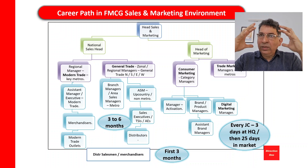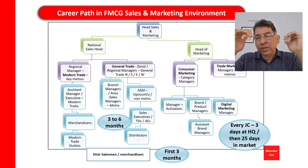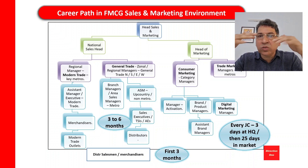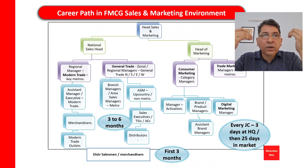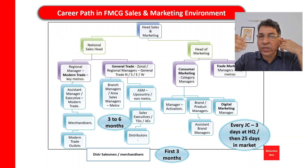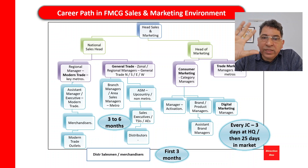The head office will have a national sales manager handling general trade and another head of modern trade. This national manager will divide the country into four to six zones — ITC calls them districts and each district will have a district manager. Zones are typically Mumbai, Delhi, Kolkata, and a South zone headquartered in Bangalore or Chennai, sometimes with additional zones in Hyderabad or Lucknow.